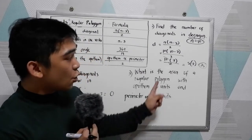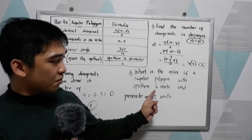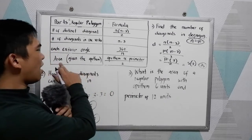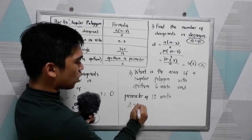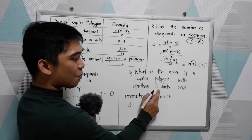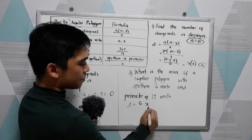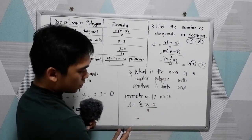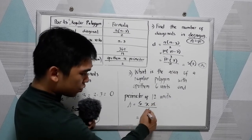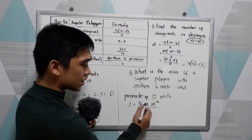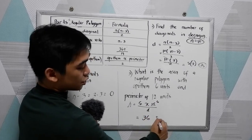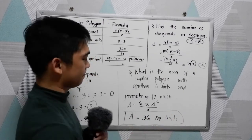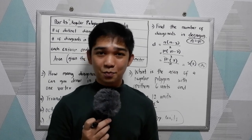Our last example: what is the area of a regular polygon with apothem 6 units and perimeter of 12 units? Area equals apothem times perimeter all over 2. So area equals 6 times 12 all over 2. Using cancellation, 12 and 2 cancel to give 6, so the area is 6 times 6 equals 36 square units. Thank you for watching, Sr. Pablo TV.